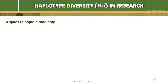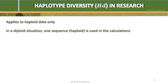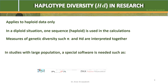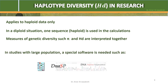This applies to haploid data only. In a diploid situation, one sequence per haploid is used in the calculations. Measures of genetic diversity such as pi and HD are interpreted together. In studies with large populations, special software such as DnaSP is needed.